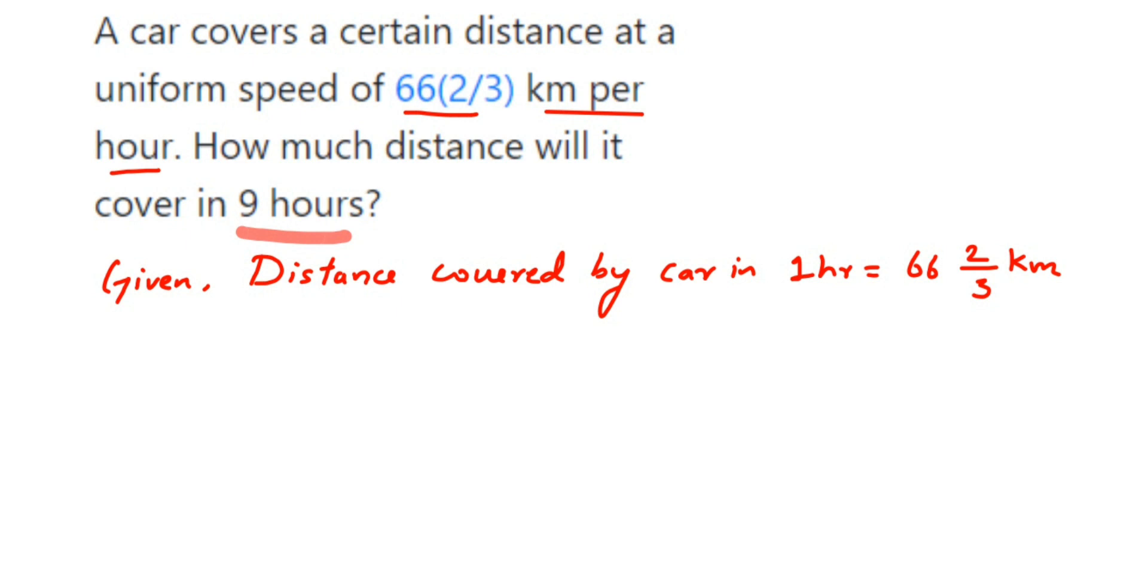You might have learned how to do this. First you have to multiply the denominator and the whole number. So 66 into 3 will be 198, plus 2 will be 200. So we'll get 200 upon 3 kilometers.